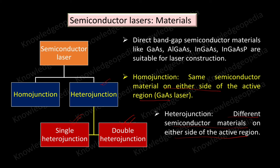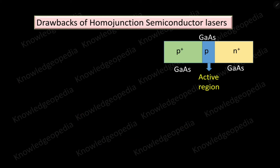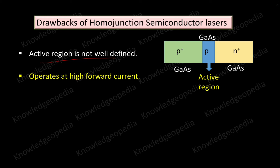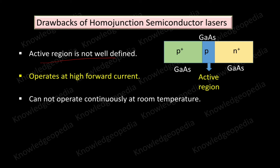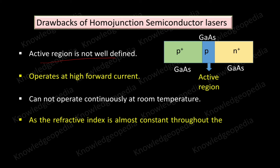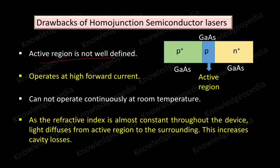In the last video we discussed about homojunction semiconductor laser — its structure, how it is fabricated, and how it operates. At the end of that video we saw the drawbacks associated with homojunction semiconductor laser. The active region is not well defined, it operates at high forward current, and it cannot operate continuously at room temperature, giving only pulsed outputs. As the refractive index is almost constant throughout the device, light diffuses from the active region to the surrounding, which leads to increased cavity losses.